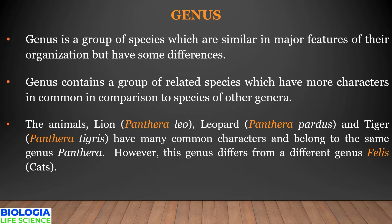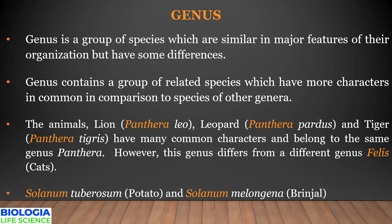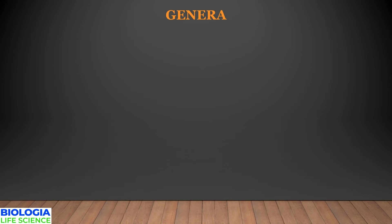They differ from another genus, Felis, which belongs to cats. In plants, potato and brinjal both belong to the same genus Solanum. Genera can be further divided into monotypic genera and polytypic genera. Monotypic genera have only one species — for example, Ginkgo biloba, the only living species of Ginkgophyta, also referred to as a living fossil. Eretmochelys imbricata, the critically endangered hawksbill sea turtle, is another example of a monotypic genus.